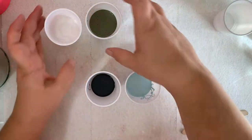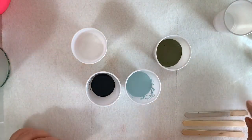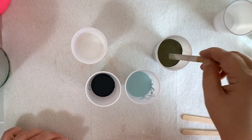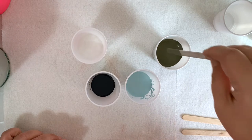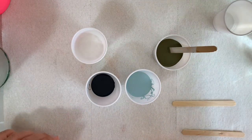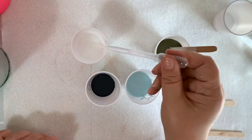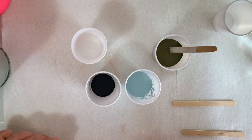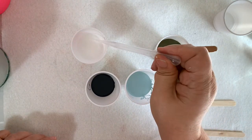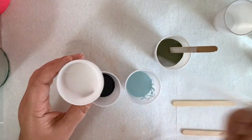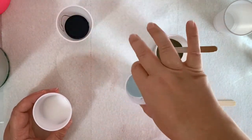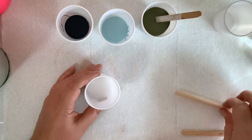I'm going to add water slowly just to get it to the consistency that I like. I do like it really runny for this project. You do want to try to get the paint the same consistency or the same thickness. If one is really thick and the others are runny, the thicker one tends to sink to the bottom and you won't see it as much on the top. So I'm going to fast forward and I'll see you once I get them all mixed up.